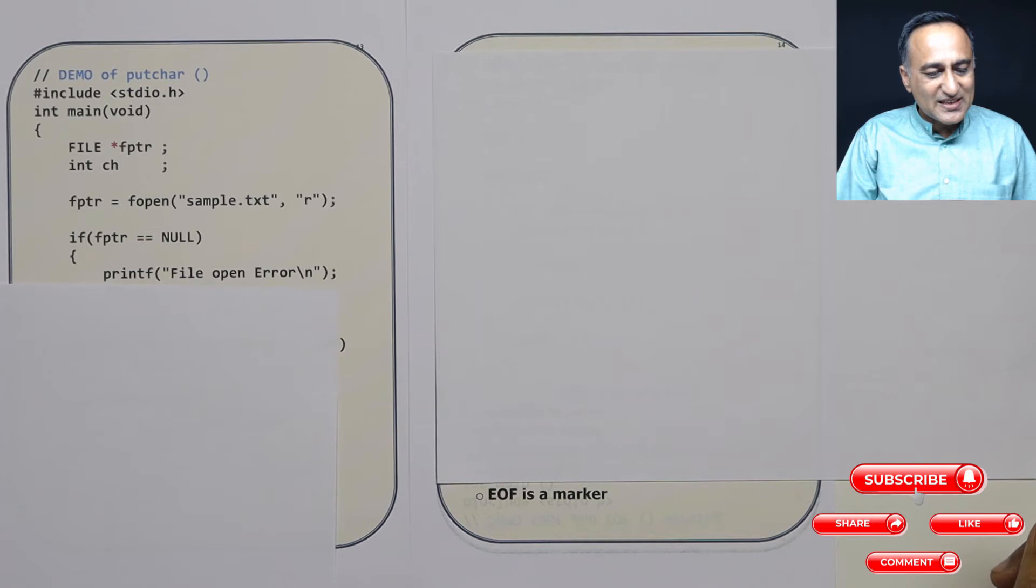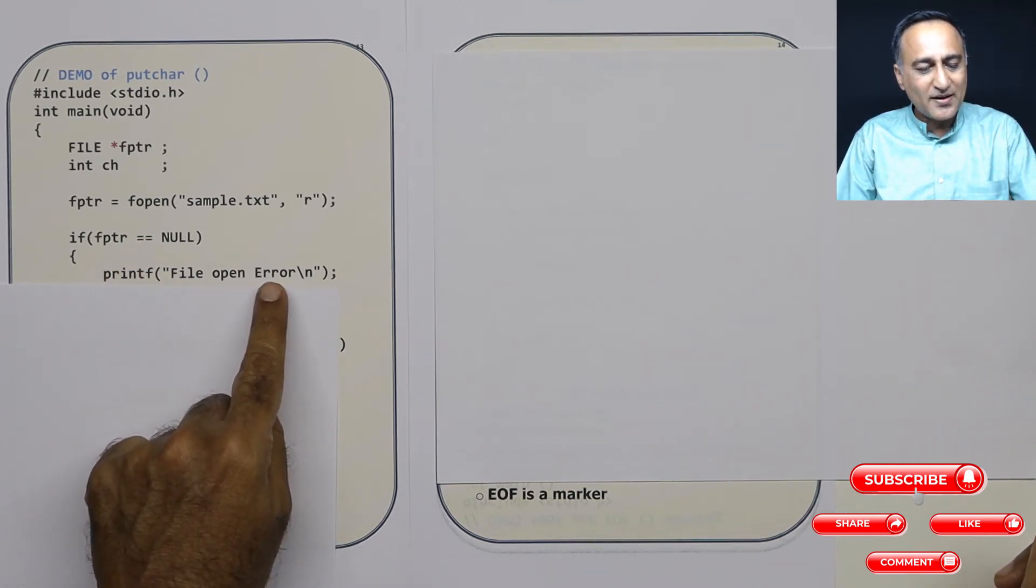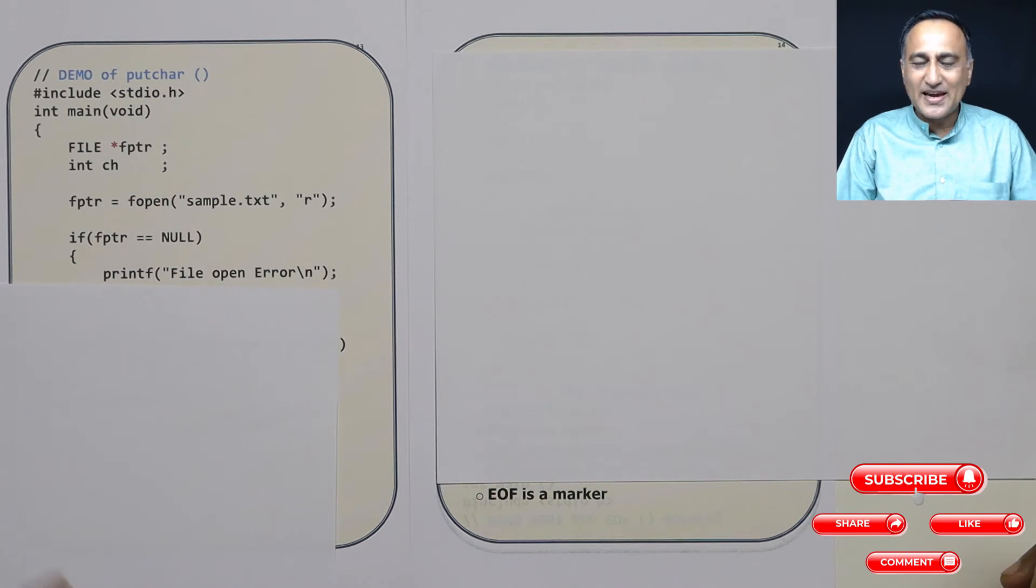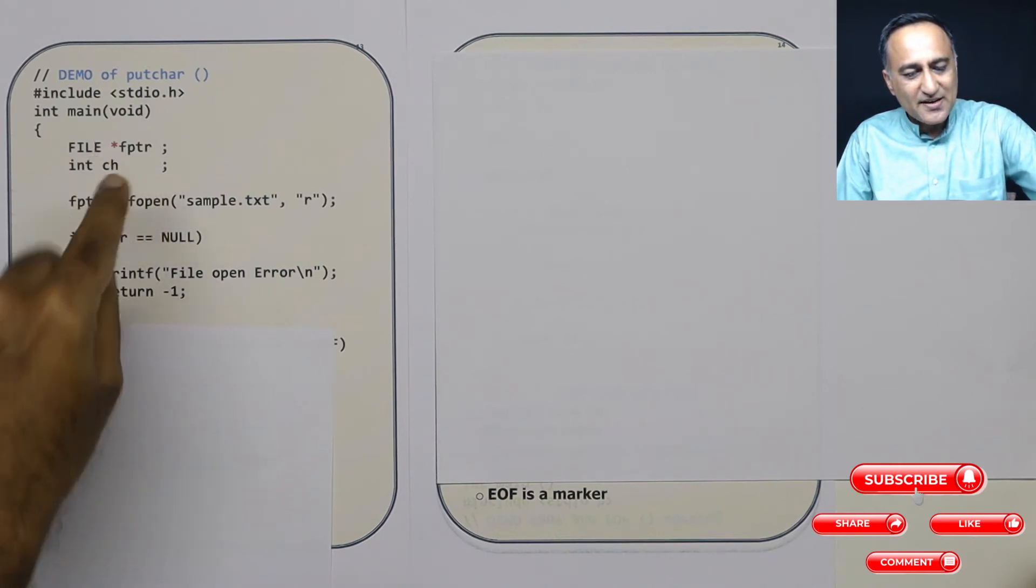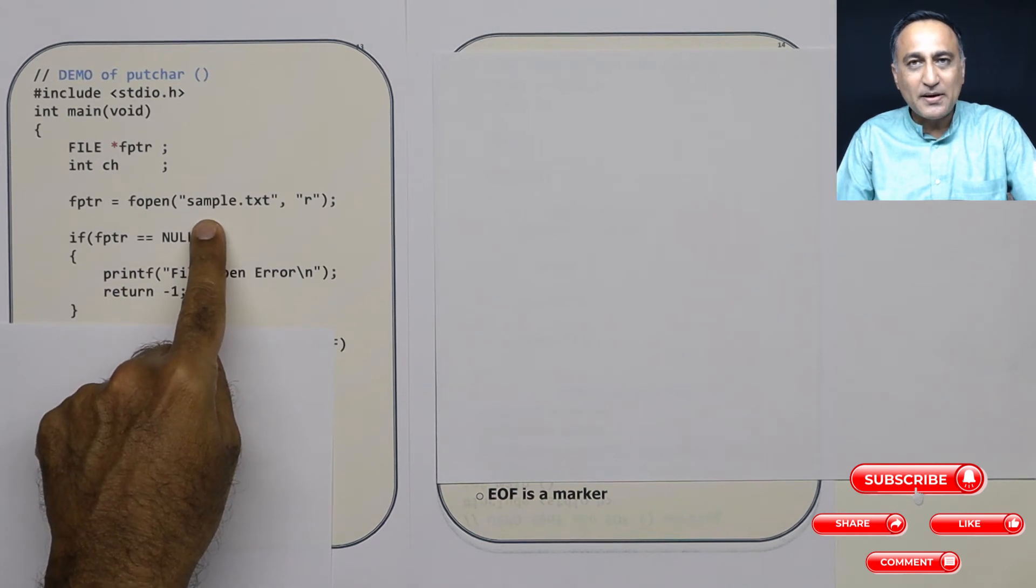If this file does not exist, then what happens is, if the file does not exist I need to give a message file open error. And since if the file does not exist, I cannot continue with the program. That's why I use this return minus one, or I could also use the exit, which will come out of this problem. So this step you need to really understand fopen is a function, the first parameter is name and path of a file.